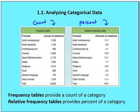Let's talk about frequency tables and relative frequency tables. When analyzing categorical data, I have a list of individual items and the format of the type of station that plays a given set of songs — adult contemporary, adult standard, contemporary hit, country, news talk and information, etc. It then lists how many stations in a particular location fall into each category.